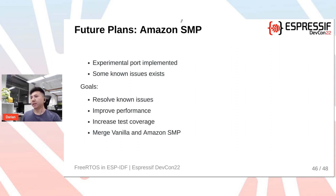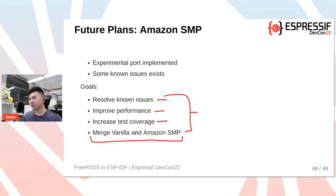For Amazon SMP future plans: it's currently an experimental port with known issues. The main goal is to make it stable enough to become the default FreeRTOS implementation in ESP-IDF, which means resolving known bugs, improving performance, and improving test coverage. Additionally, Amazon is working on merging the Amazon SMP FreeRTOS codebase with the vanilla one, ultimately resulting in a single version of FreeRTOS that handles both single-core and SMP operation.